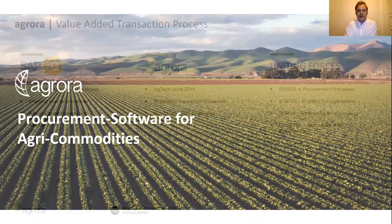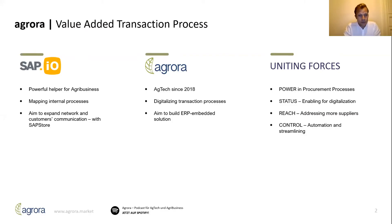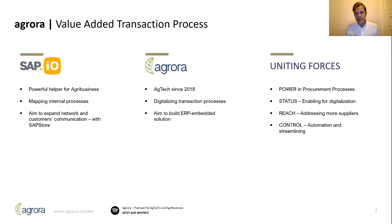SAP has become a very important business in terms of the digitalization of agribusiness processes. And even more important, SAP I.O. now emphasizes on strengthening its network effect by opening up the app store to startups, such as Agrora. Agrora is a software company focusing on agricultural transaction processes since 2018.